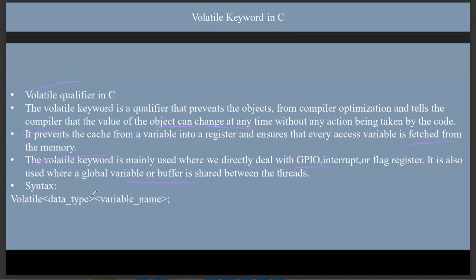The volatile variable declaration syntax is: volatile followed by the data type, followed by the variable name. That is how we declare a volatile variable.